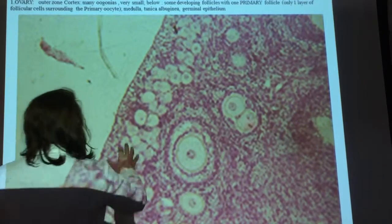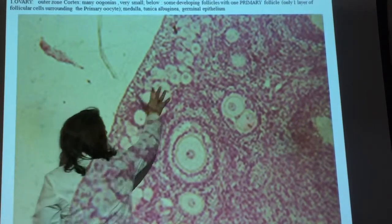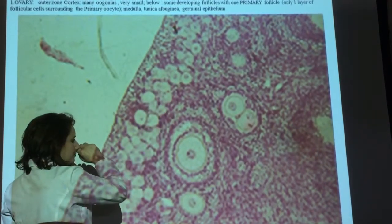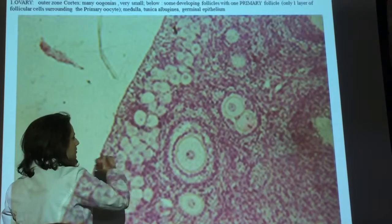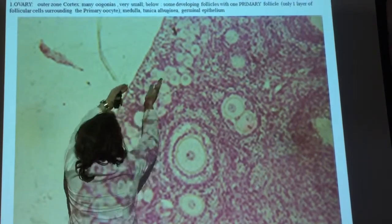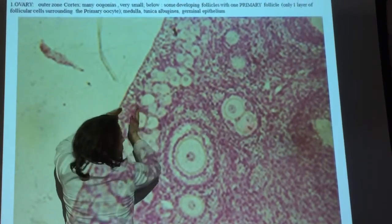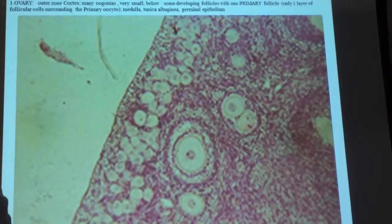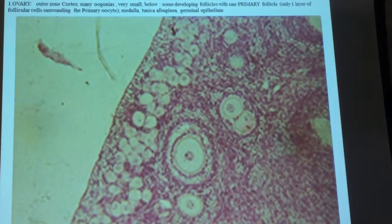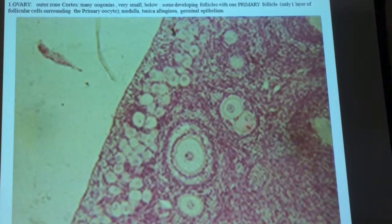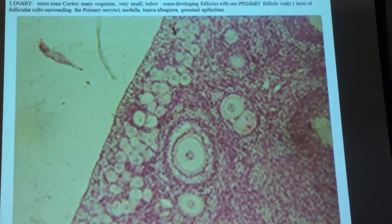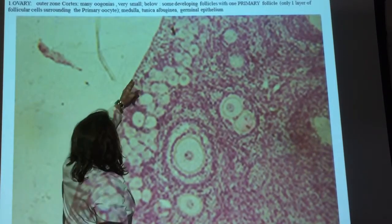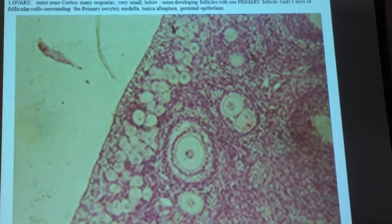Right here, these are oogonia, just like in the seminiferous vesicles. The stem cells tend to be very, very close to the cortex, and they're very, very small. Those are the oogonia. And the tunica albuginea with epithelial layer is right here.